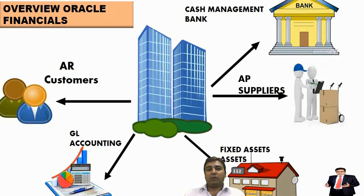The first three — assets, liabilities, and owner's equity — constitute the balance sheet, which determines the net worth of the company. Revenue and expenses are components of the income statement, which determines the financial position of a company over a specified period. Assets and expenses increase in a debit account and decrease in a credit account. Liabilities, owner's equity, and revenue increase in a credit account and decrease in a debit account. All debit and credit accounts of the General Ledger always remain equal, and these accounts are summarized in trial balances from which financial statements are generated.